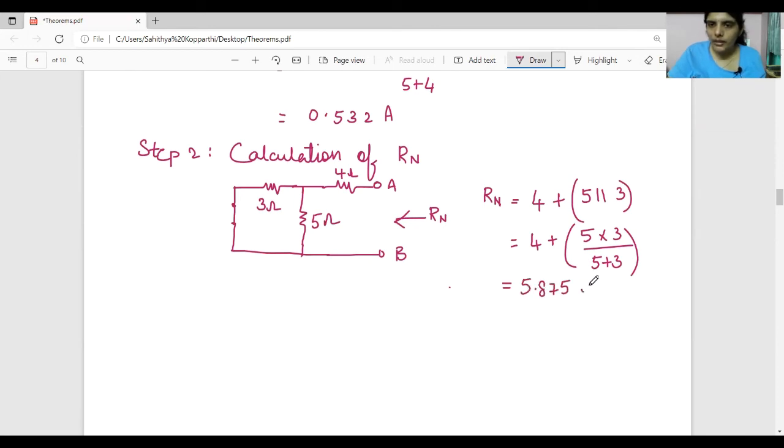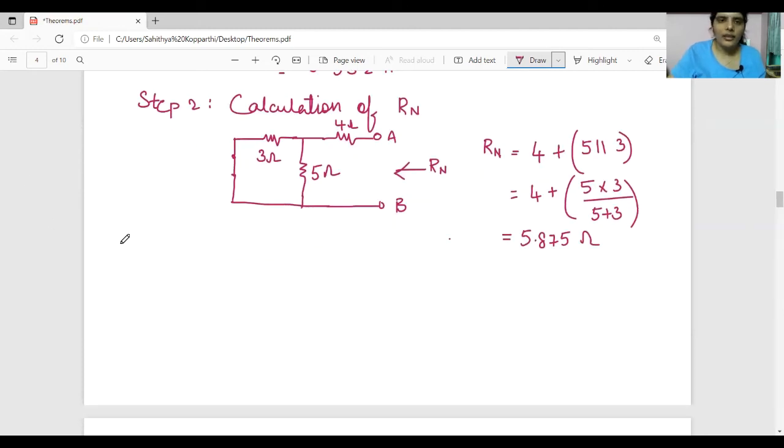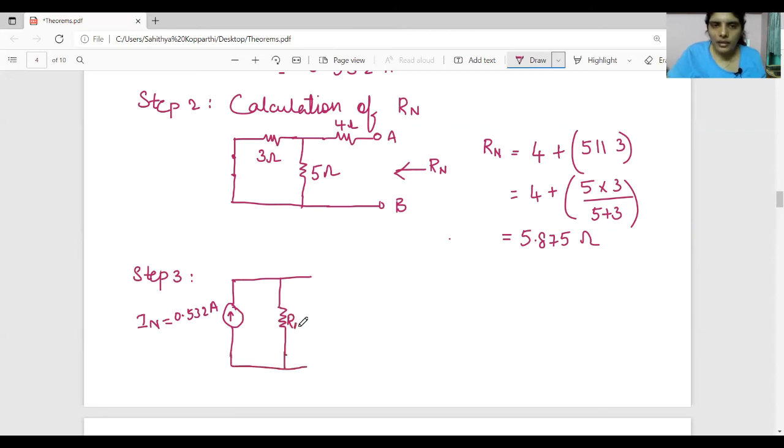Now third step, draw Norton's equivalent circuit. Step 3, that is IN is in parallel with Norton's resistance. IN is about 0.53 amperes. RN is 5.875 ohms.